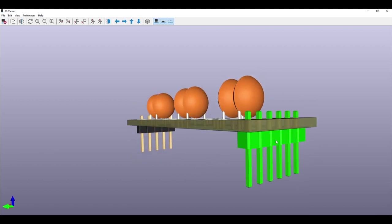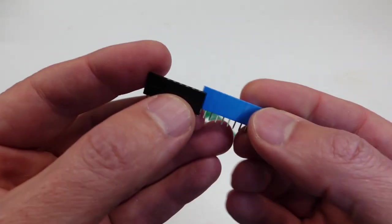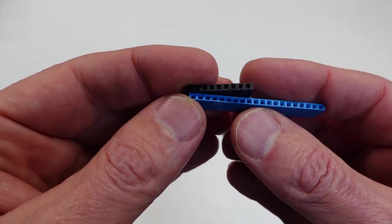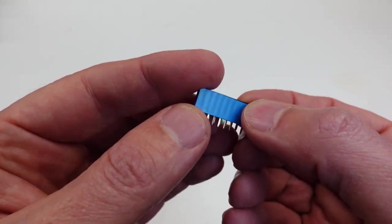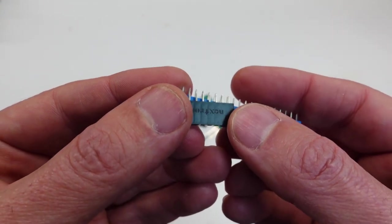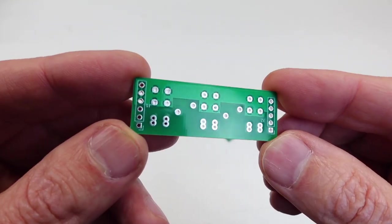I'm also using standard 2.54 millimeter pitch pin headers and sockets for the interconnects. I did investigate using other connectors, but I think these will work fine, especially since I tripled up the pins to share the load. One end uses six pins and the other five and one side is blue in color and the other is black. This provides some physical and visual polarity as the filter construction is not reversible.